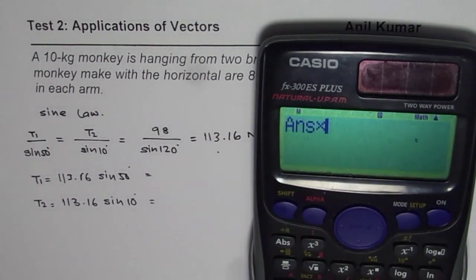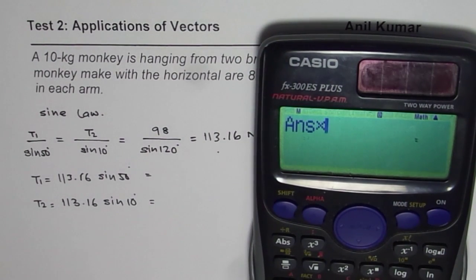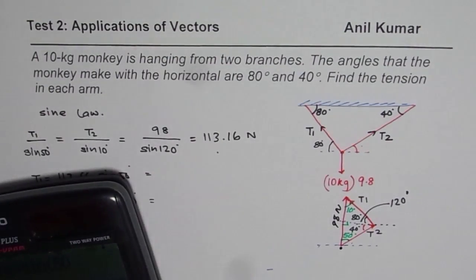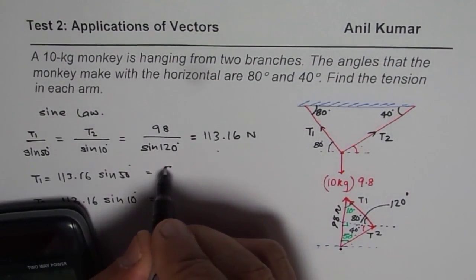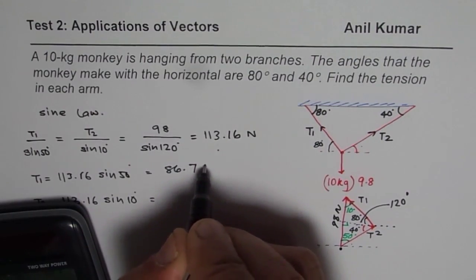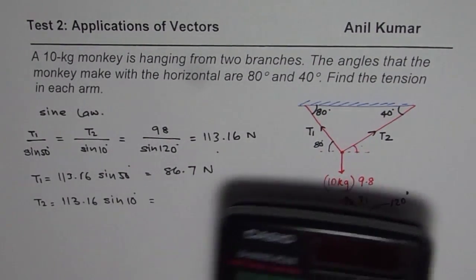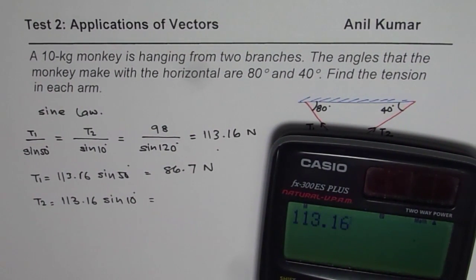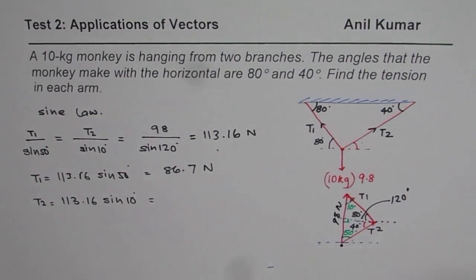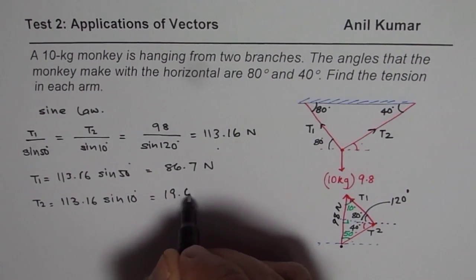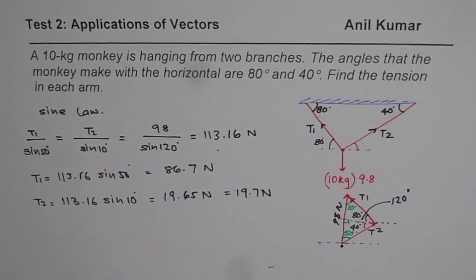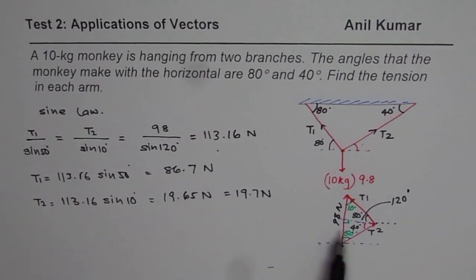Let's multiply this number by sine of 50 degrees. You get 86.68, let me write this as 86.7 Newtons, just round it to one decimal place. The other one is 113.16 times sine of 10, that gives us 19.65. So 19.7 newtons.